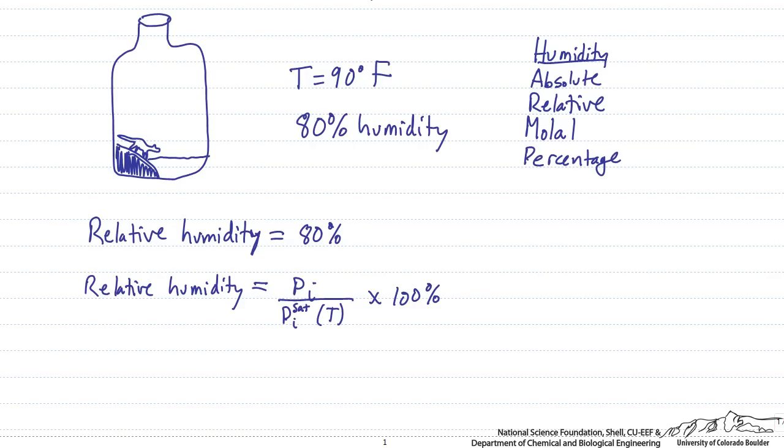So for our system, we know that we have 80% relative humidity. We don't yet know what the partial pressure is of component I or P_I^sat at our temperature. So we need to look up the saturation pressure of water from a table.